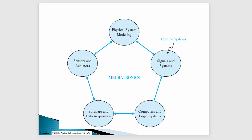There is one term — signals and systems. When signals and systems are combined, these are known as the control system. With the help of sensors, we get signals, and we give those signals to the actuator or to a mechatronics system. With the help of these signals, our machine performs its function.